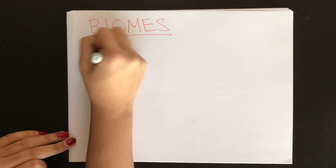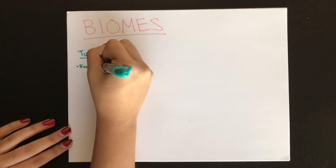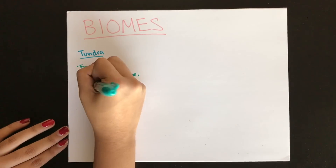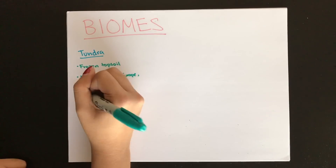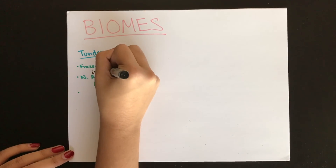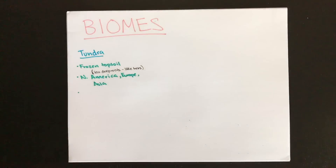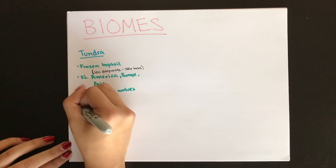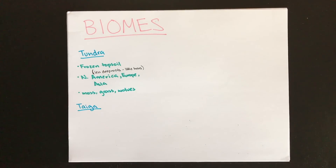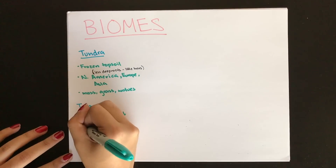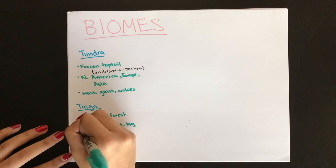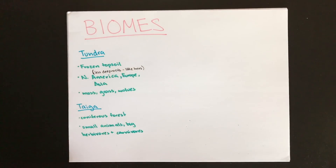A tundra is characterized by permanently frozen topsoil found in northern parts of North America, Europe, and Asia. Because of this frozen topsoil, deep plant roots can't form, so there are very few trees — mostly small grasses and mosses. Few mammals live there, such as wolves. The taiga is a coniferous forest with cone-bearing trees. Its fauna includes small animals like squirrels, large herbivores like deer, and large carnivores such as the grizzly bear.